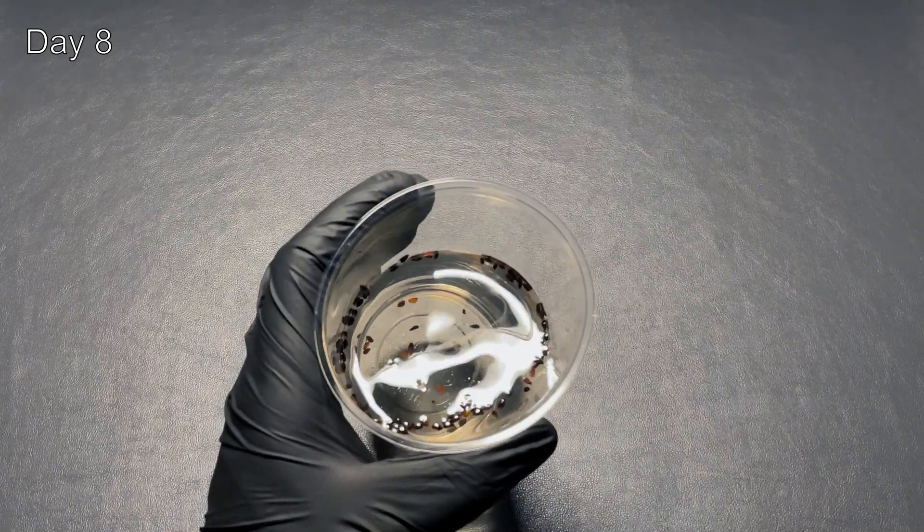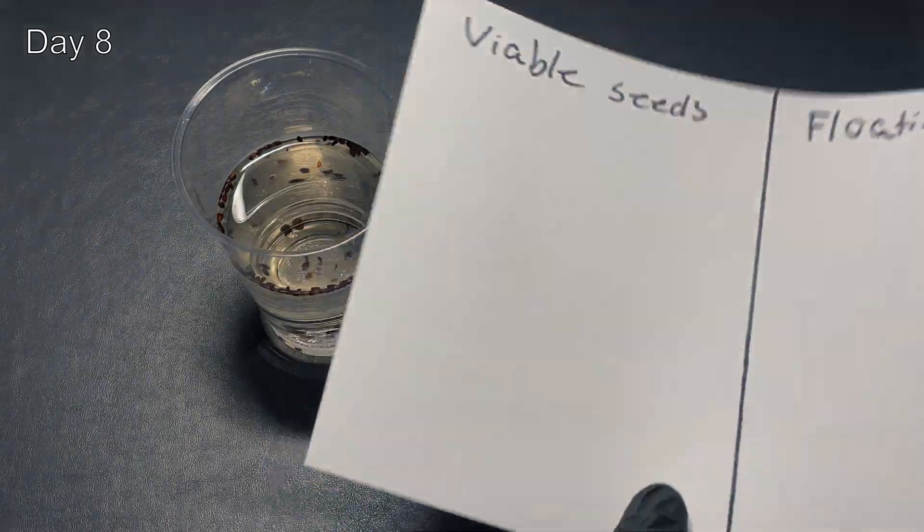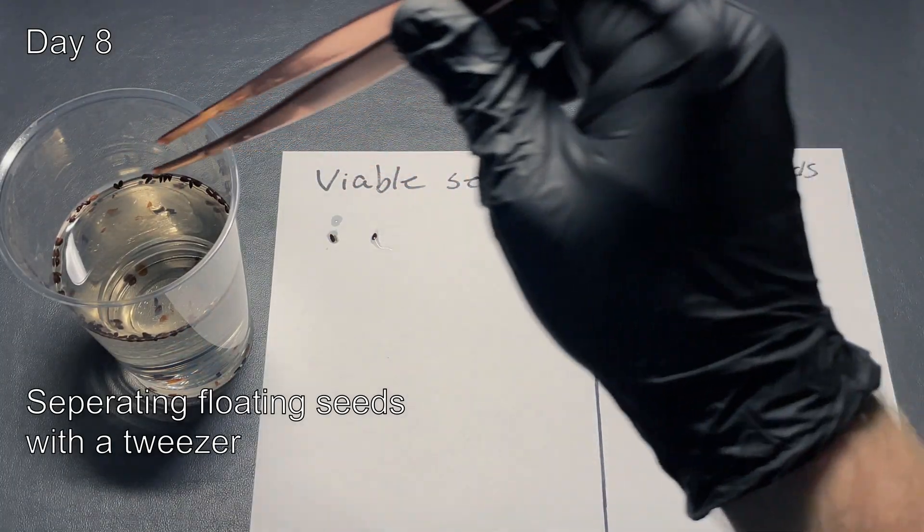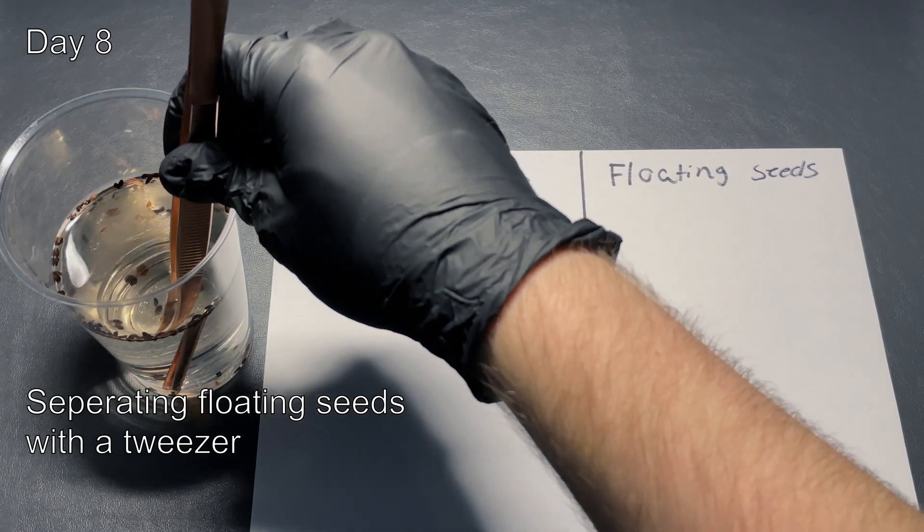Now it's time to sort the seeds. According to people on the internet, the floating seeds won't germinate, so place them on one side of the paper. Afterwards, place the viable seeds which are not floating on the other side.